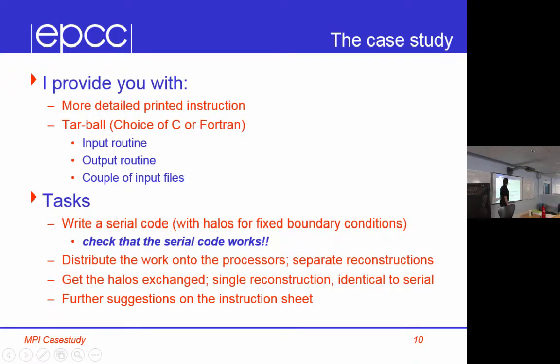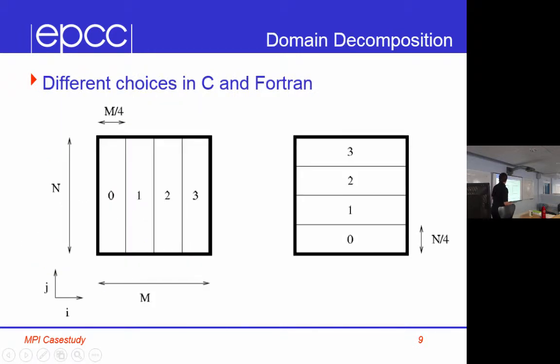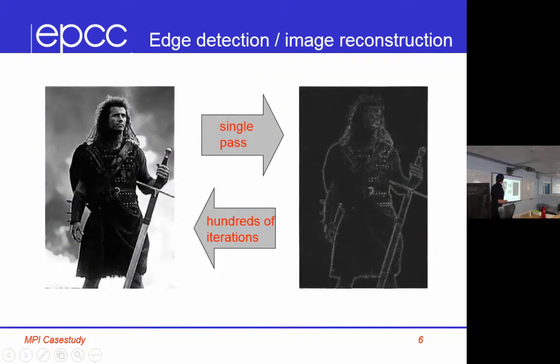Then, you distribute the work onto the processors, but you do independent reconstructions without communication. And what you'll find is that each process will reconstruct its own image, but it won't communicate with its neighbors. And what you'll see is, you'll see that the image looks okay, except you get big black lines across it, because you haven't communicated the halos. But at least that proves that you're doing the I/O correctly, you're distributing the data correctly, you're reading it back correctly, and you're doing a sensible local calculation.